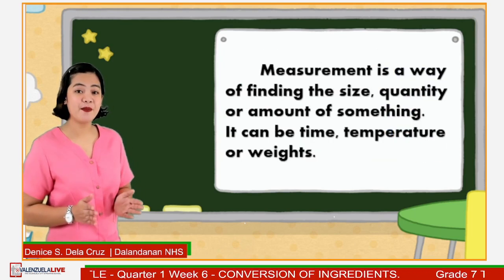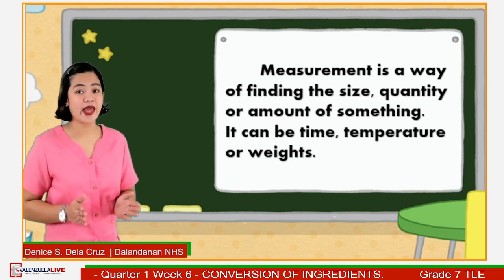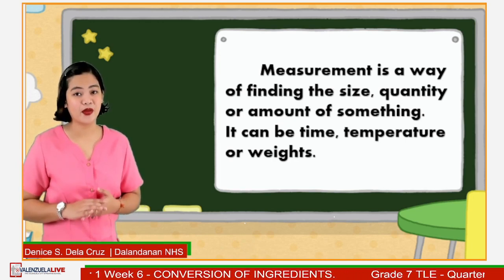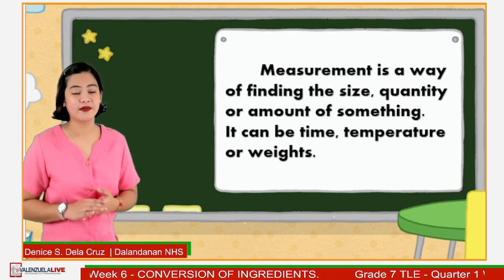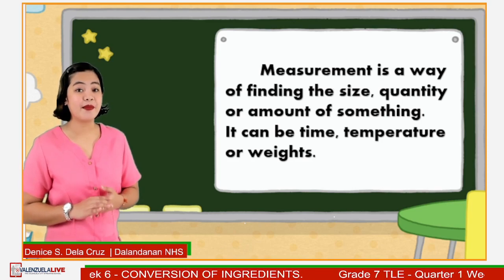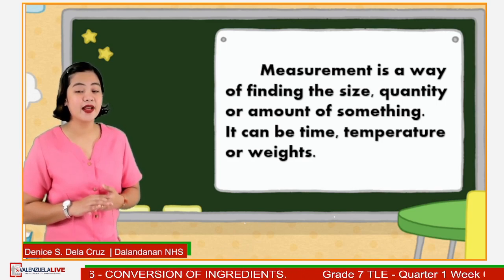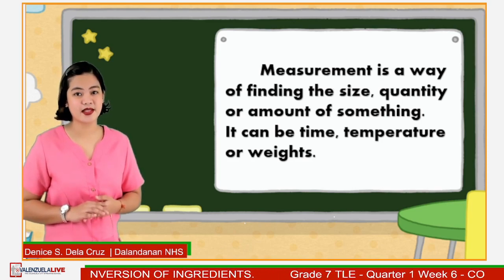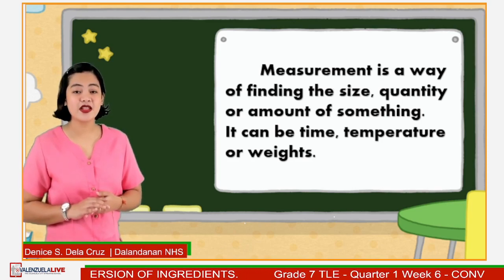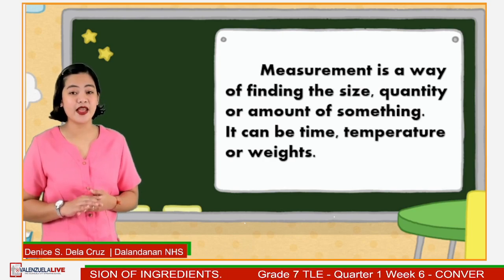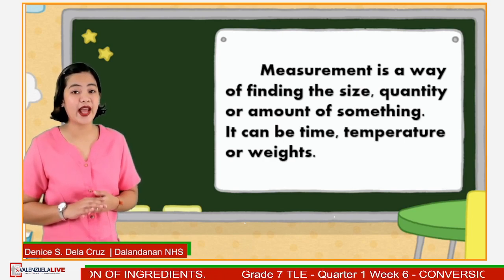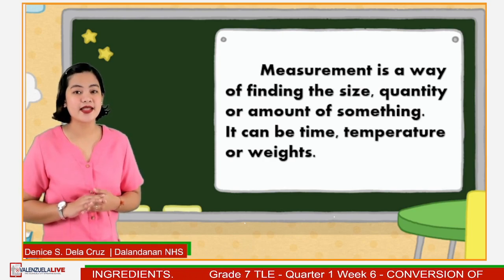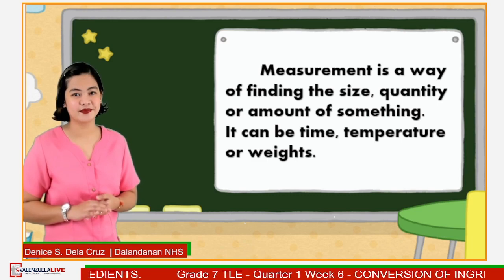Measurement is a way of finding the size, quantity, or amount of something. It can be time, temperature, or weight. These are some of the things to be measured accurately to ensure successful cooking results.